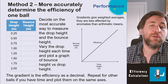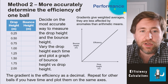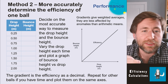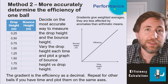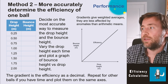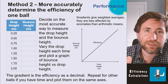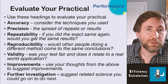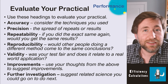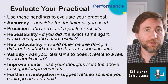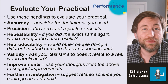Method two gives greater accuracy: use one ball and drop it from a range of heights — 25 cm, 50 cm, 75 cm, up to two meters. Plot a graph of bounce height against drop height; the gradient will equal the efficiency as a decimal. Gradients are less affected by anomalies than arithmetic means, making them very good for accurate averages. Work through each evaluation keyword in turn — consider how you could improve each point if you were to repeat the practical.